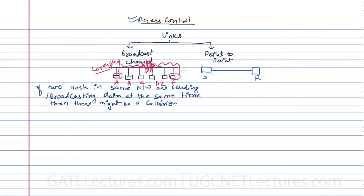Access control means if this is the channel and there are more than one hosts in the network, we need to control which host gets access to send data at one time. If we give access to both A and F simultaneously, there may be a collision. Therefore, access to this link has to be controlled such that if one station is sending data, then others — station B, station F, station E — should not send data at the same time.